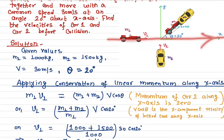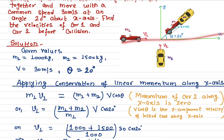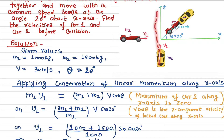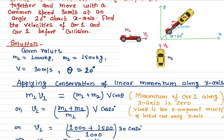We apply conservation of linear momentum along the x-axis and then along the y-axis — two equations total. Along the x-axis, car one is already moving along x, so its momentum is m1 times v1. Car two is moving only along the y-direction, so its momentum along the x-axis is zero.